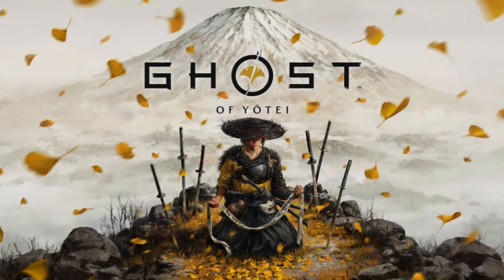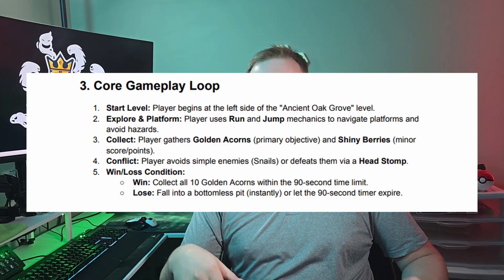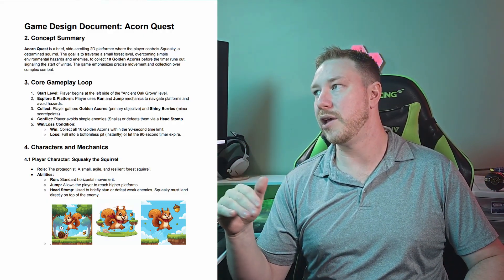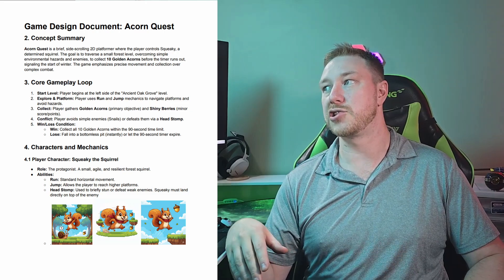Next, we're going to move on to gameplay mechanics and the core loop, which is the overall experience for the player. The core loop is the repetitious action that the player does throughout the game to progress. For example, Ghost of Tsushima's loop is: explore, fight, loot, upgrade, and liberate. For Acorn Quest, the loop is simple: start level, explore and platform, collect, then win and loss conditions. The win condition is specifically to collect all 10 acorns within the 90-second timer — a tight timer and collectible count that defines the entire feel of the game.